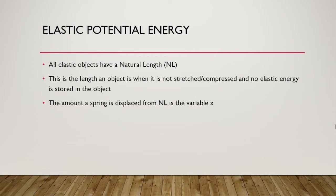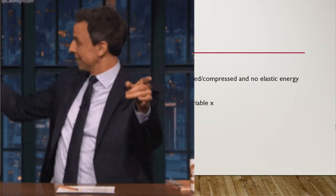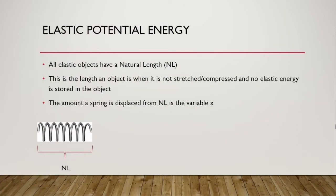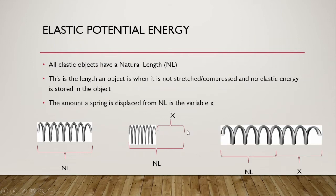If I were to stretch a spring, it would have an X distance from that natural length. If I were to compress it, same thing. Here we can see an ordinary spring with some natural length. Over here, we are compressing the spring — pushing it inward — and X stands for how far we compressed it. On the flip side, we can also stretch it, and the distance stretched is that X distance.